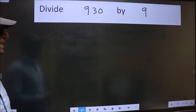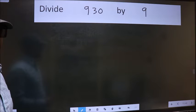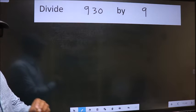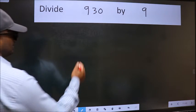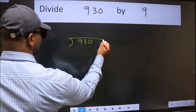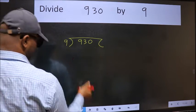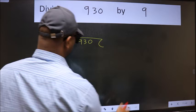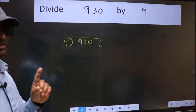Divide 9.30 by 9. To do this division, we should frame it in this way. 9.30 here and 9 here. This is your step 1.